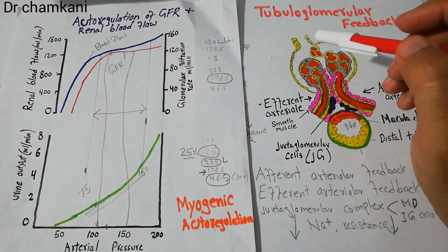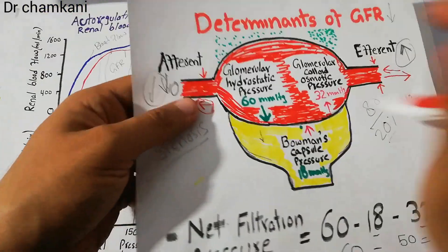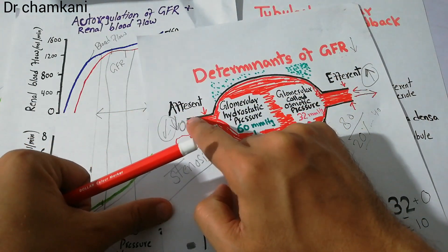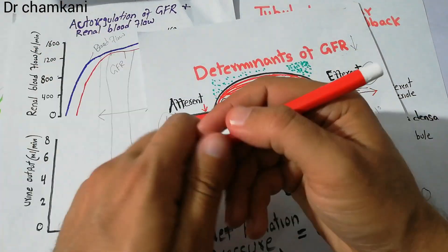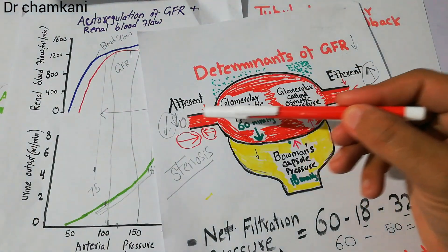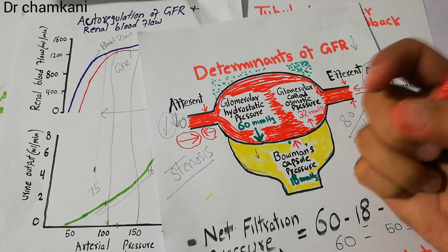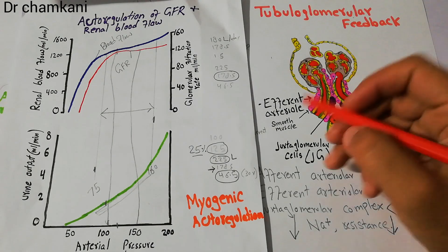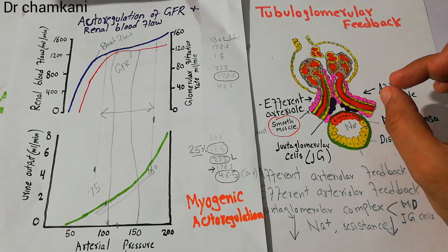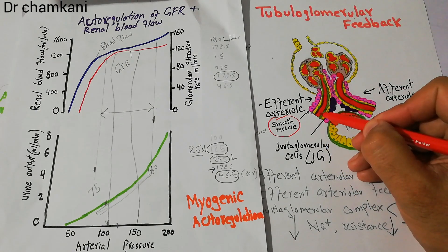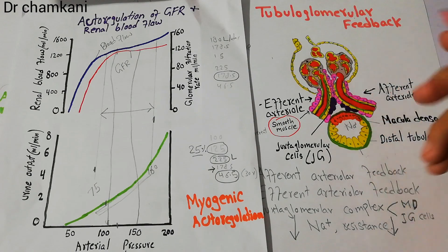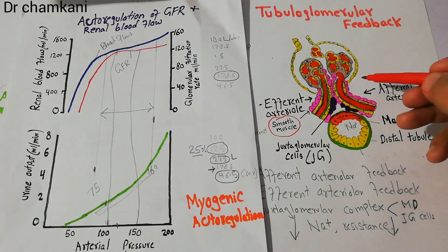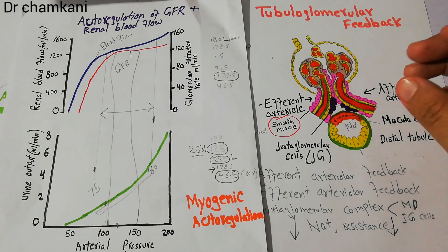In the myogenic mechanism, when arterial pressure increases, that increase in pressure stretches the blood vessels. Due to this stretching, the vessels try to contract, because stretching of these blood vessels initiates calcium intake from the extracellular fluid into the smooth muscles. When the arterial pressure increases, these smooth muscles contract and do not allow a lot of blood to enter the glomerular capillaries.